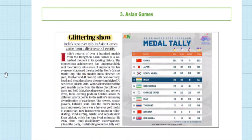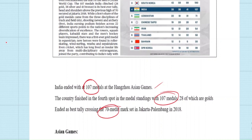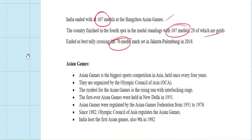The next article is about the Asian Games. India won around 107 medals, including 28 gold medals. The games were held in Hangzhou, China. Last time, the Asian Games were held in Jakarta, Indonesia, where India achieved 70 medals. The increase to 107 medals shows growth in the Indian sports sector. The Asian Games is the biggest sports competition in Asia — considered the Olympics of Asia — and is organized by the Olympic Council of Asia.